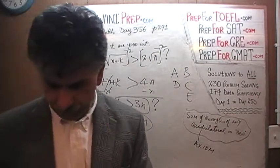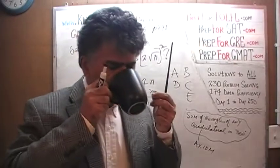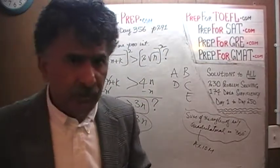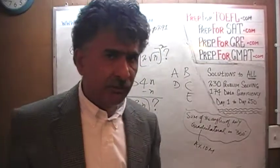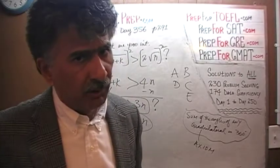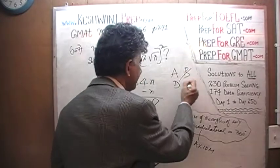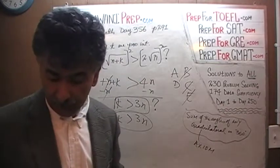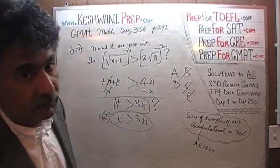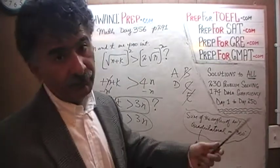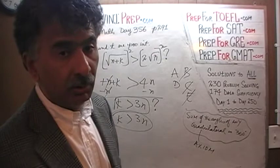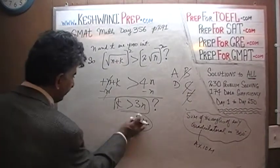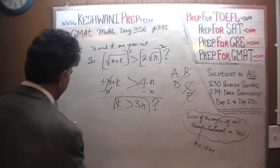Now that we've established the first statement is enough, the answer cannot be B, C, or E — it would have to be either A or D. If the second statement by itself is also enough, then the answer is D; otherwise it remains A. Let's look at the second statement.